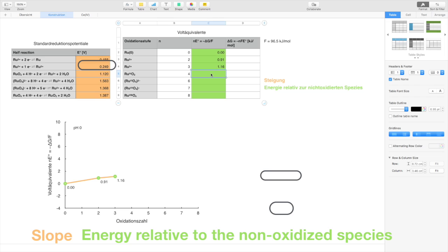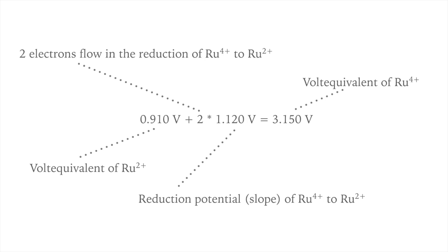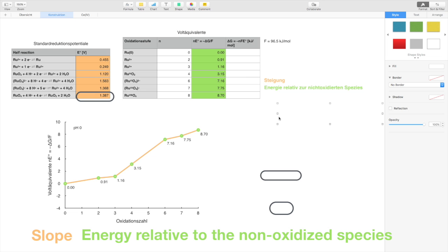We also have the reduction potential between ruthenium 4 and ruthenium 2. We can calculate the energy level of ruthenium 4 with the energy level of ruthenium 2 and the slope between ruthenium 2 and ruthenium 4. We get all remaining energy levels according to the same principle. The slope between all species is positive. This makes sense because all reduction potentials are positive as well.